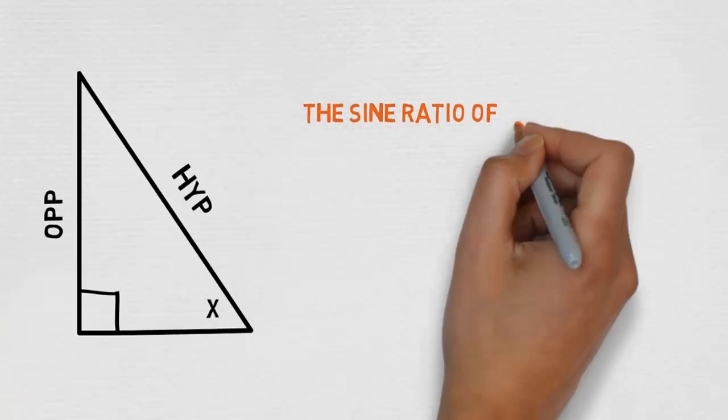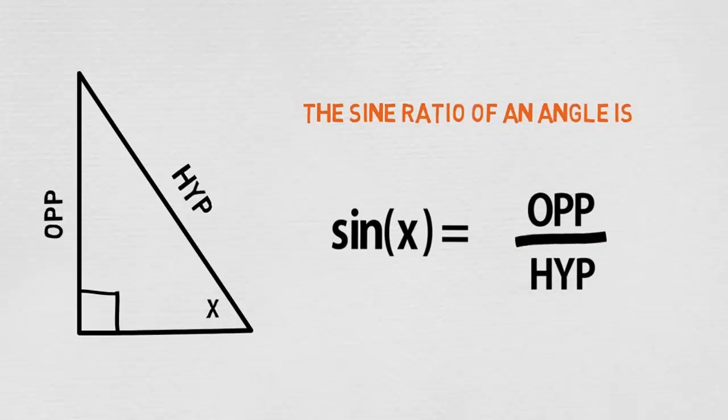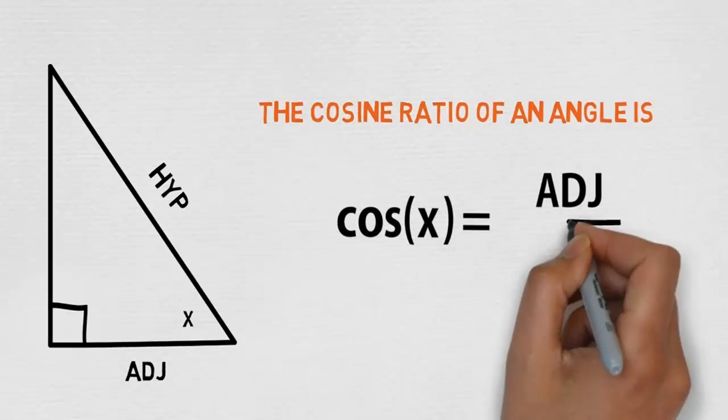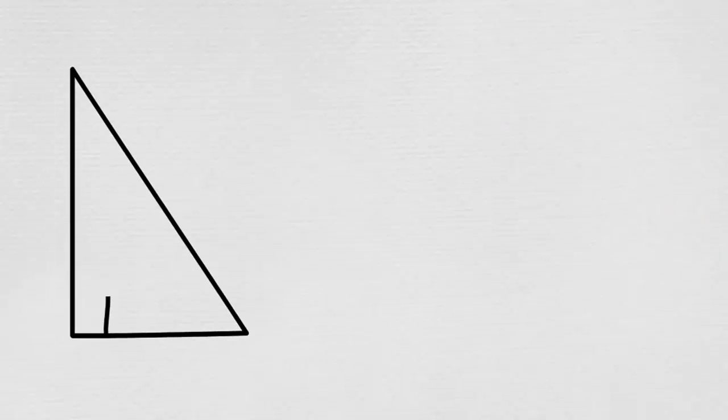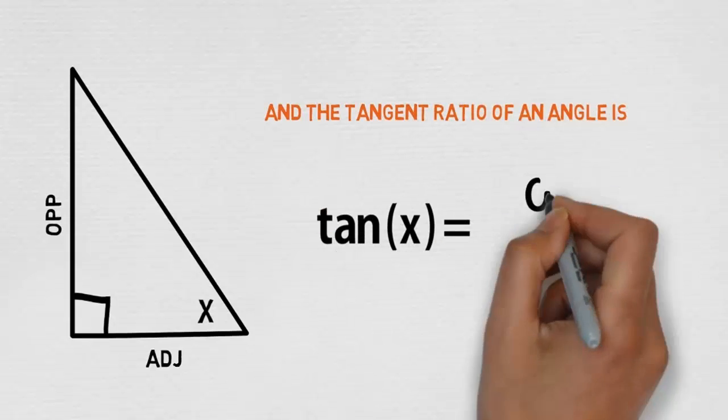The sine ratio of an angle is sin x equals opposite divided by hypotenuse. The cosine ratio of an angle is cos x, which is the adjacent divided by the hypotenuse. And the tangent ratio of an angle is tan x, which is the opposite divided by the adjacent.